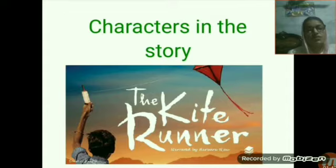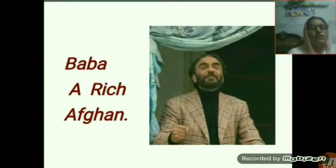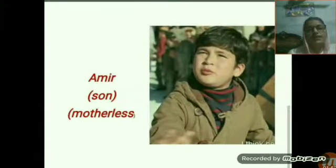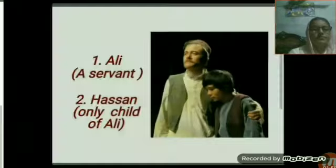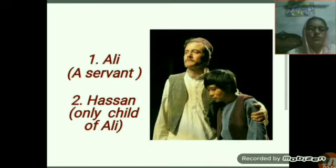First, we will talk about the characters in the story. There are four main characters. The first one is Baba — he is a rich Afghan. The second is Amir — he is the son of Baba and did not have a mother. The third is Ali, a servant of Baba, and Hassan is the only child of Ali.